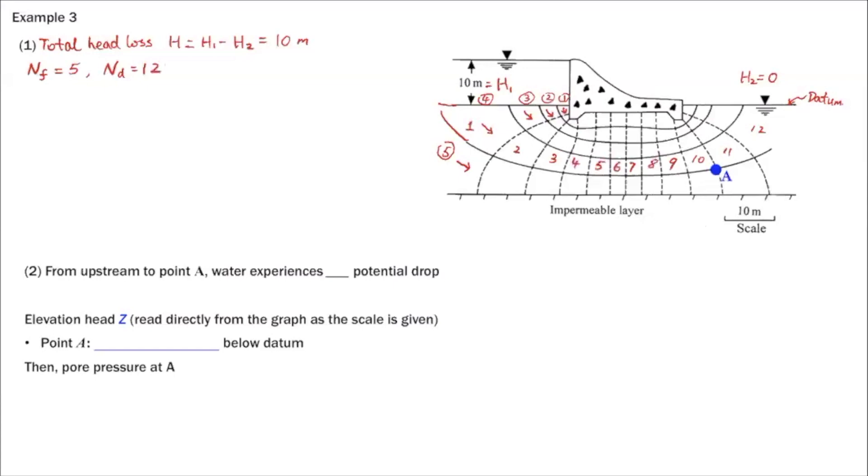And we are assuming L over B is 1 for this flow net. And with this information, we can calculate delta h, which is the potential drop between two adjacent equal potential lines. So that's the total head loss divided by number of potential drops. So this is basically the information we can get from a given flow net.